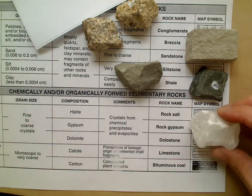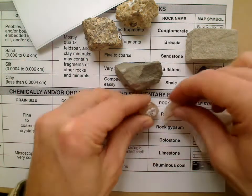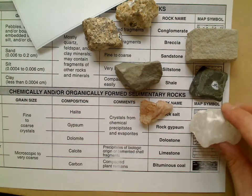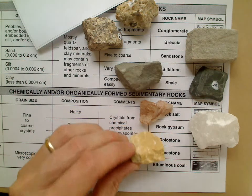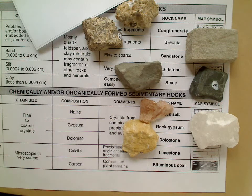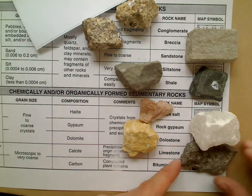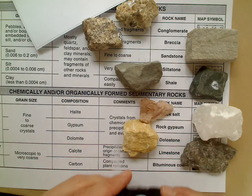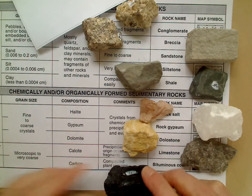Now for the crystalline rocks — I have rock gypsum right here, some small pieces of rock salt with a little bit of a reddish tint, dolostone, limestone, and this is bituminous coal right here.